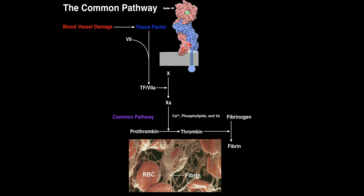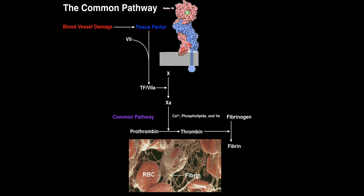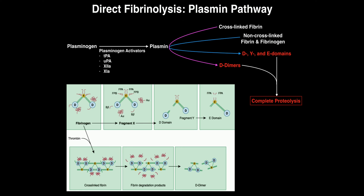We've supposedly got fibrin threads that have prevented further blood loss at the site of tissue injury, but also in places where we have healthy blood vessels we don't want fibrin clots to be forming there, and so in those areas we may have activated plasmin.